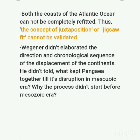The third criticism is that Wegener didn't elaborate on the direction and chronological sequence of the displacement of the continents. He didn't explain what kept Pangaea together till its disruption in the Mesozoic era, and why the process didn't start before the Mesozoic era. He was criticized on this basis too — that he was unable to prove why the drift only started in the Mesozoic era and not before.